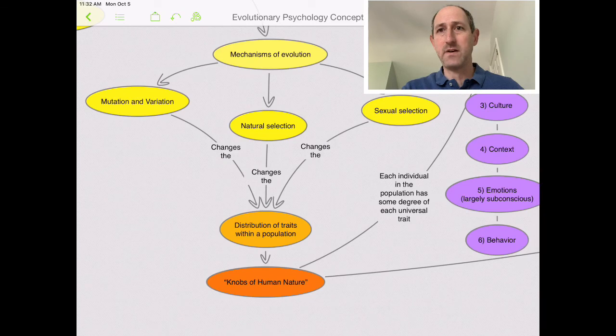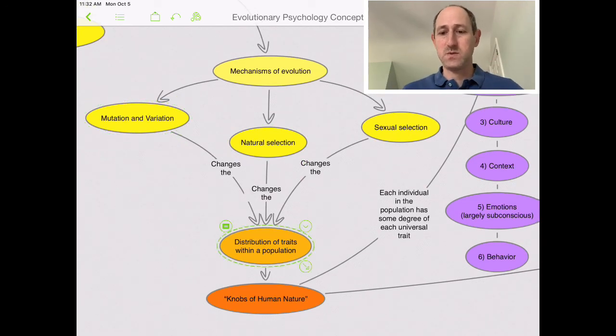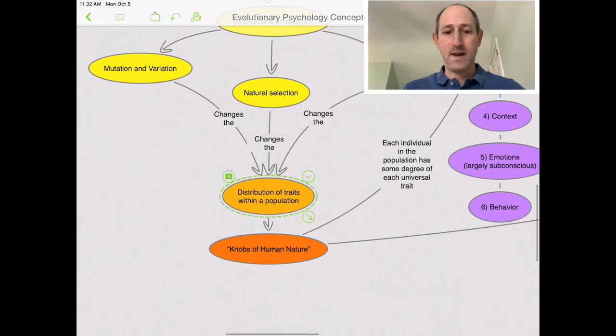It happens both with males selecting females and females selecting males, and it's different in different species. But all those things, the mutation, the variation, the natural selection, and the sexual selection, all of those three things are going to change the distribution of traits within a population.